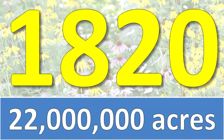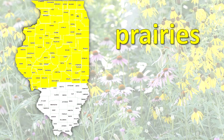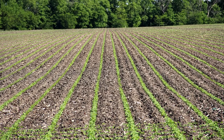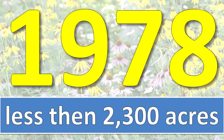Where are the prairies in Illinois? In 1820, Illinois had 22 million acres of prairie land. Prairies were mainly in the northern two-thirds of the state, with forests in the southern one-third. By 1900, most of Illinois' prairies were gone. Most of the land was converted to farming practices.